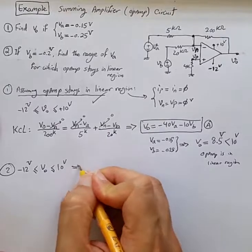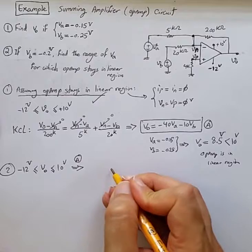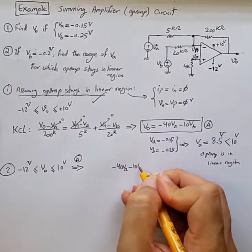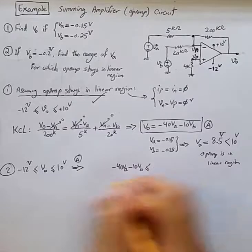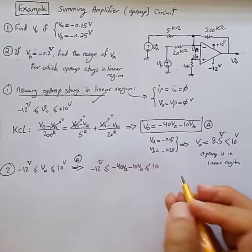And from this, let's use equation A and replace Vout. So we get minus 40VA minus 10VB should be less than or equal to 10 and minus 12 here.